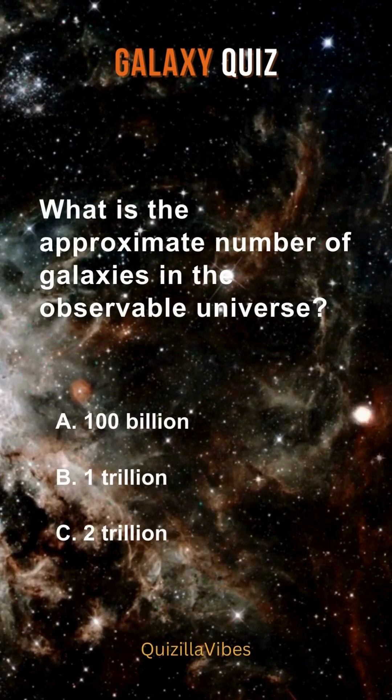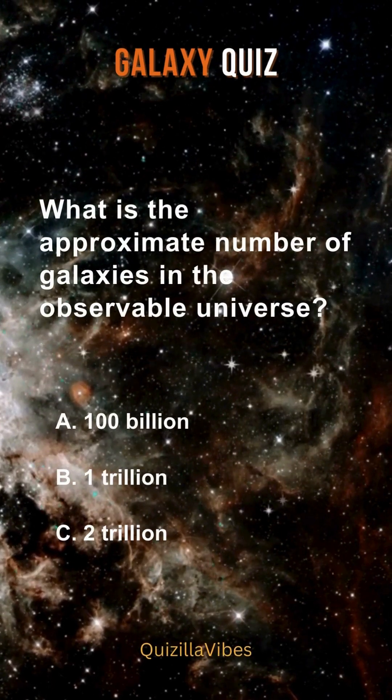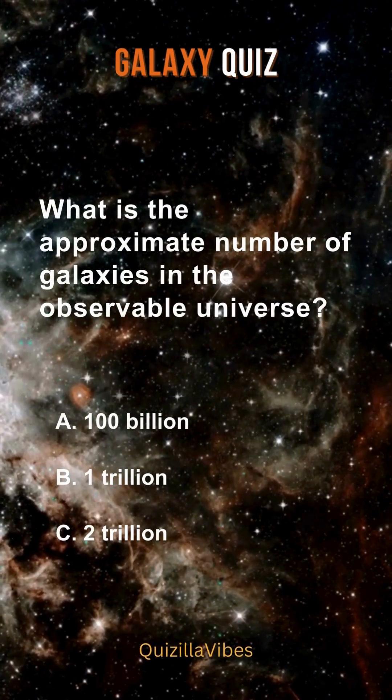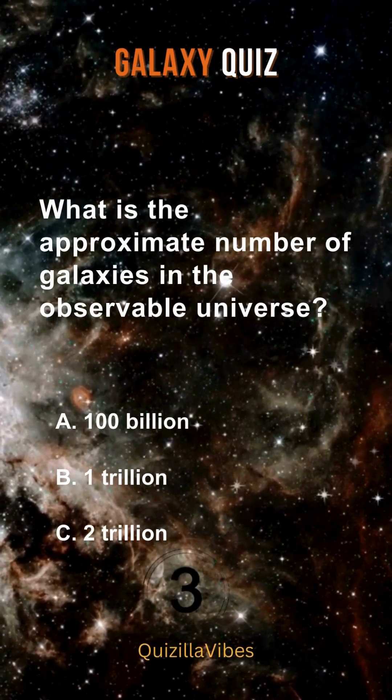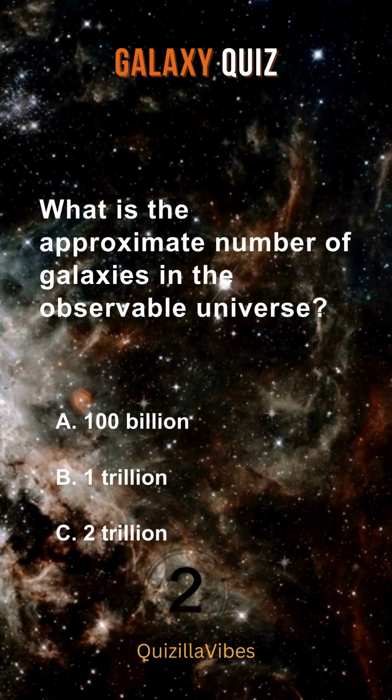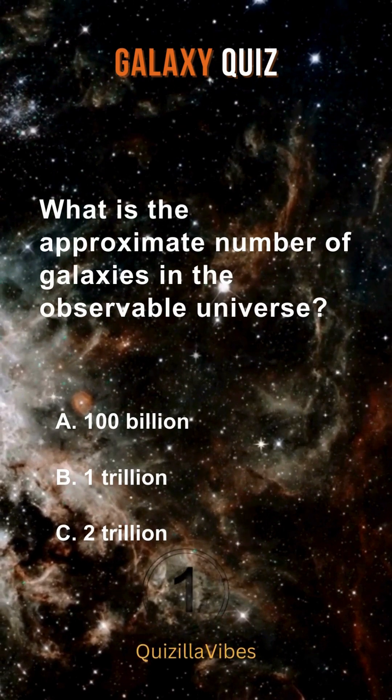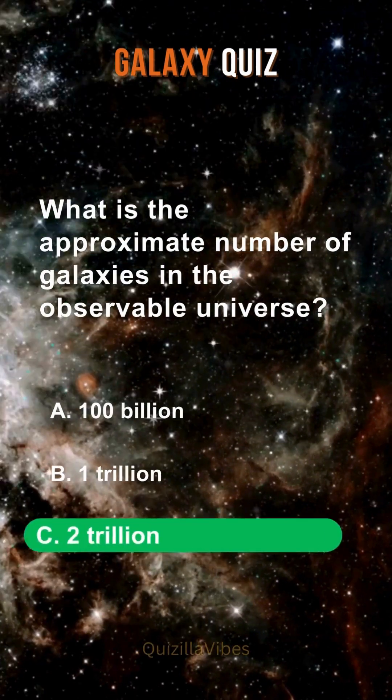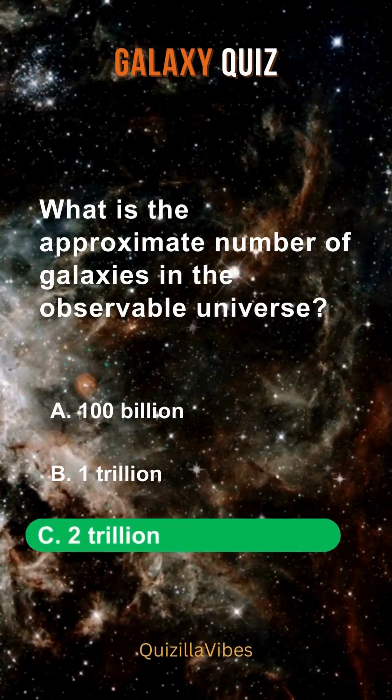What is the approximate number of galaxies in the observable universe? Two trillion.